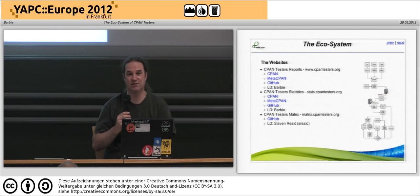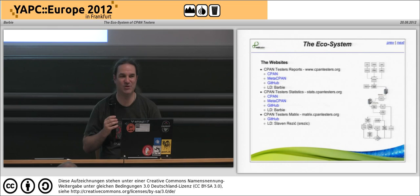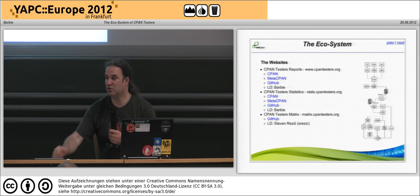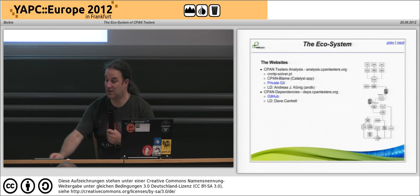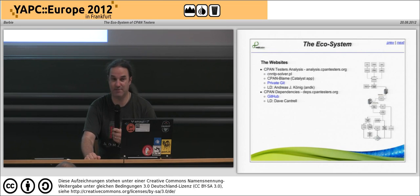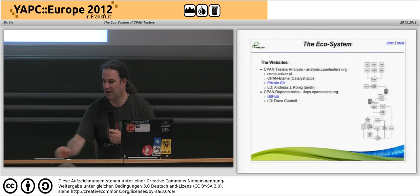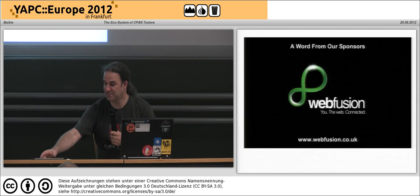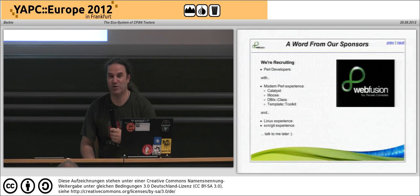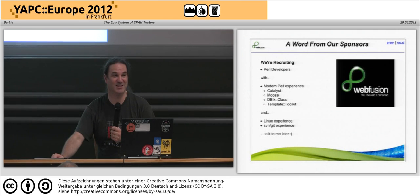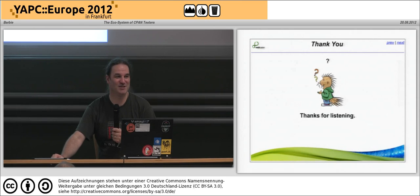If you want to look at some of the websites, a number of people ask me if they can add features or whatever. Pretty much all the websites are now online. We have the CPAN Testers main report site, the statistics site, the matrix site written by Slaven, the analysis site written by Andreas, and CPAN Dependencies — which takes a lot of the API information we're providing to analyze how dependencies work within a particular CPAN distribution — created by Dave Cantrell. Just before I finish, I'm working for Web Fusion these days, so if anybody's interested in a job in the UK please come and talk to me.